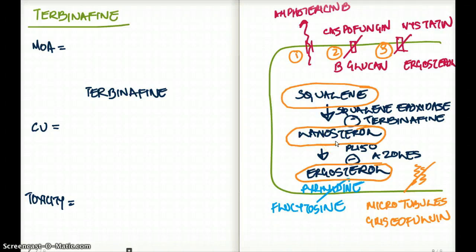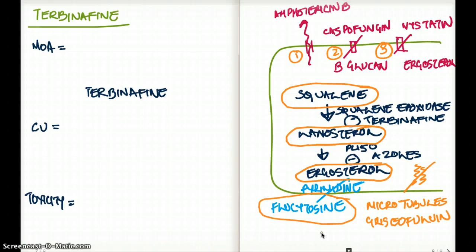What about DNA synthesis? Pyrimidine synthesis is inhibited by a drug called flucytosine. Flucytosine converts nucleotides to 5-fluorouracil using the enzyme cytosine deaminase. As a result, the fungus cannot continue making more DNA, therefore inhibiting the fungal cell. We use flucytosine for systemic mycosis as well, in combination with amphotericin B — for example, for cryptococcus and candida.